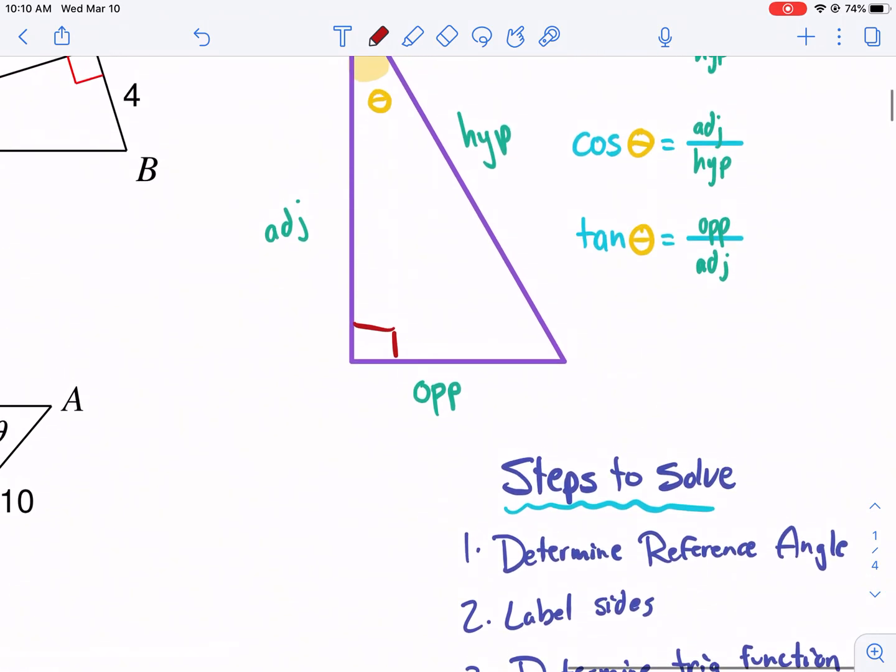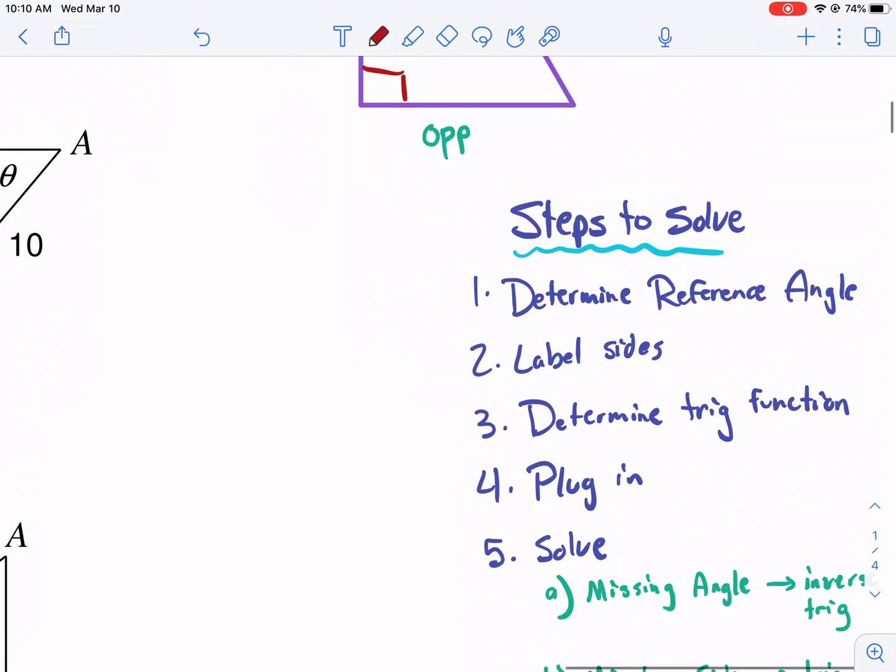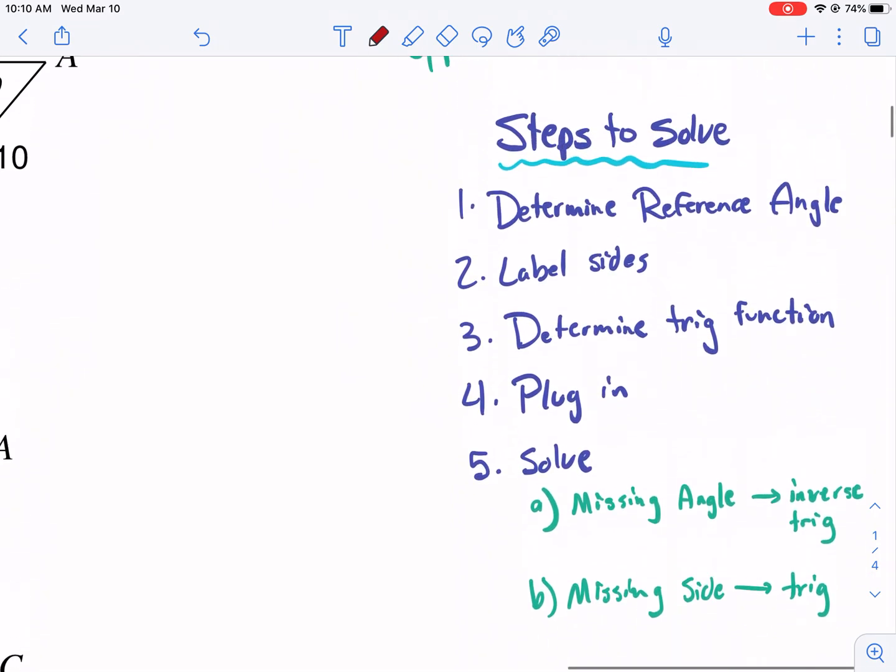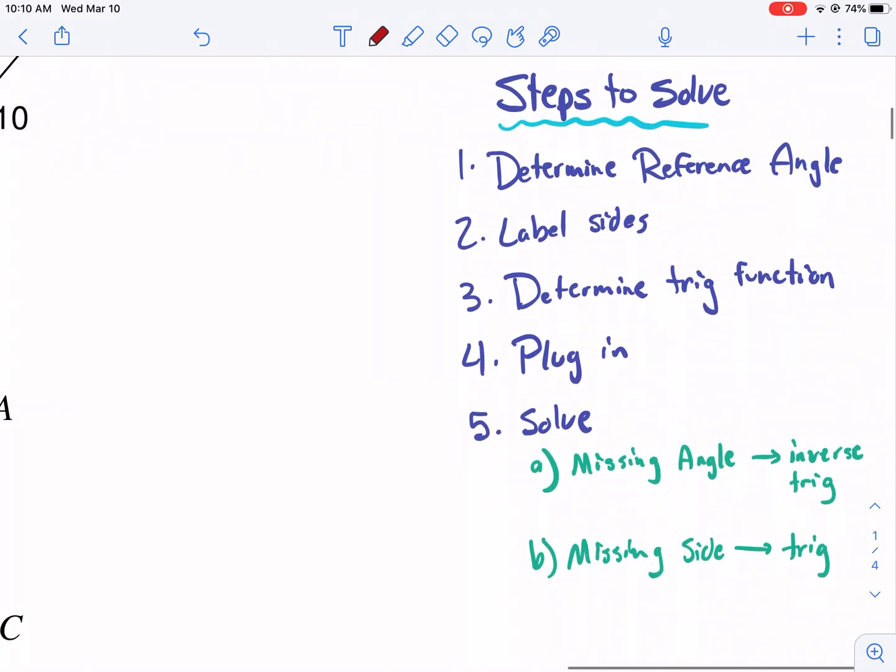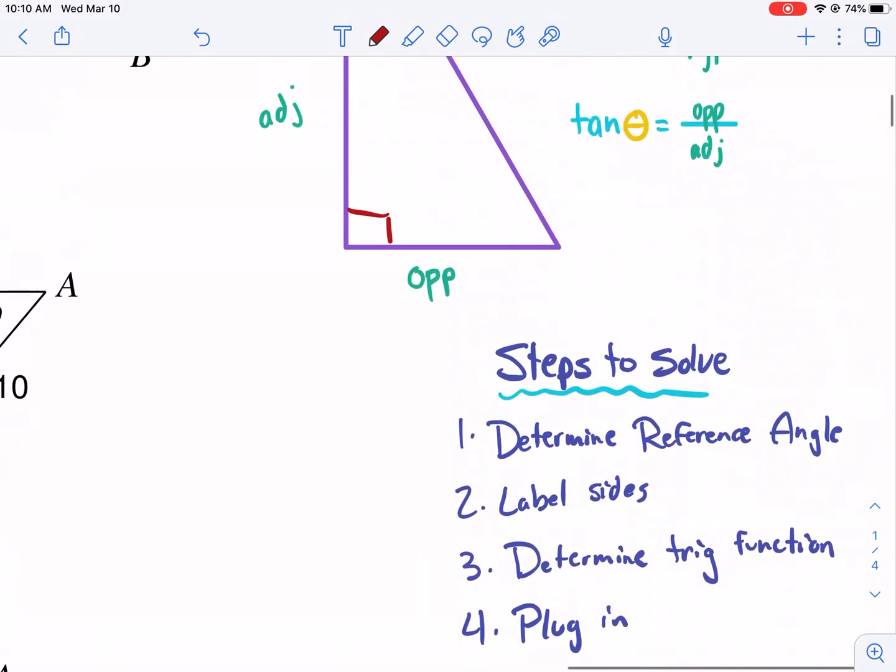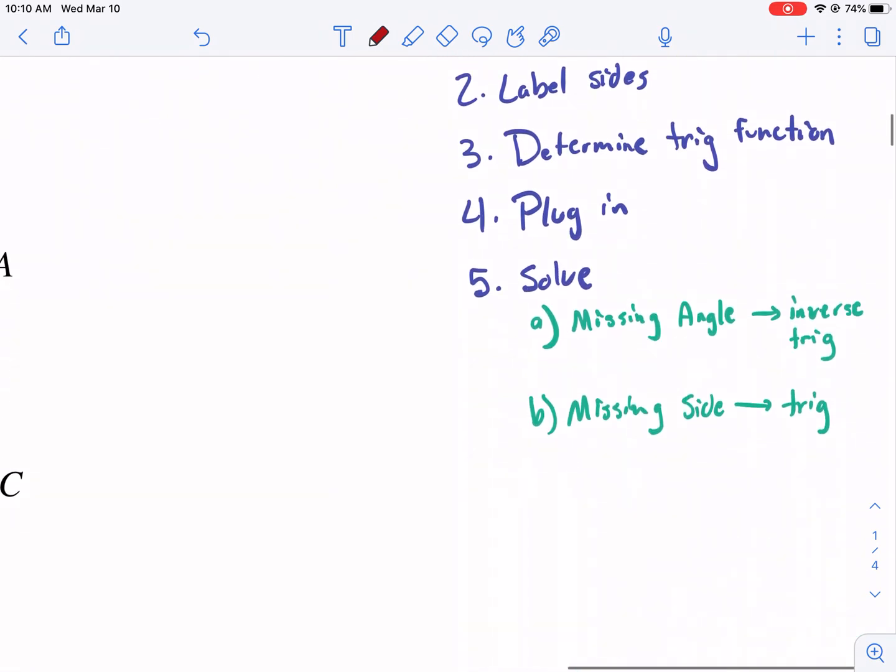Step two, label the sides: opposite, adjacent, and hypotenuse. Number three, determine the trig function. If we have only the opposite and adjacent given, then we're going to be using tangent because that's a trig identity that only uses those two sides. Four, we're going to be plugging in those numbers, and then five, we're solving.